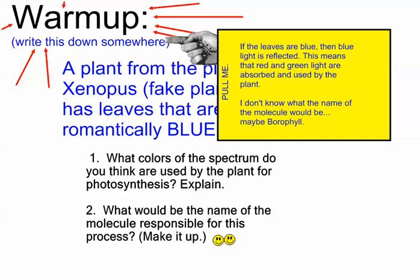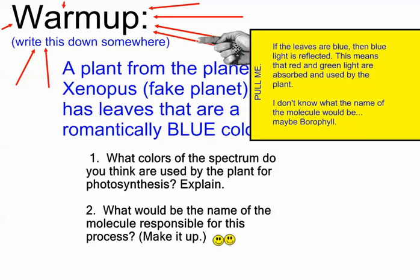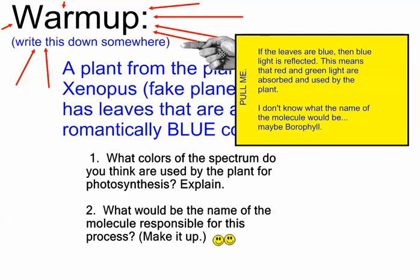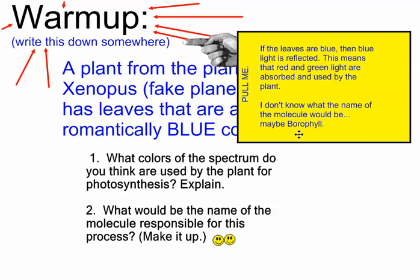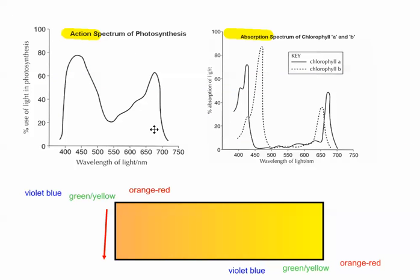If the plants were actually blue, then that means that blue light is actually reflected. So red and green light are primarily absorbed. And so on this hypothetical planet, red and green light would contain the energy wavelengths that are necessary for whatever photosynthesis, if it was called that over there. And the molecule might be called borophyll, because I made that up.